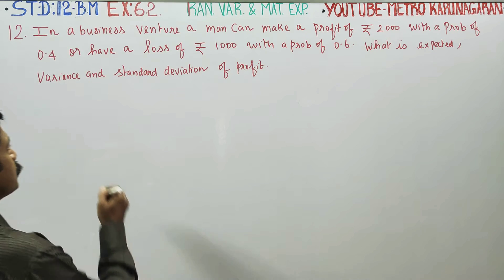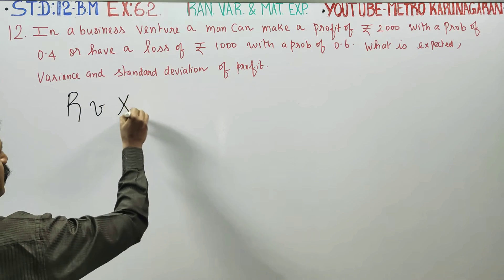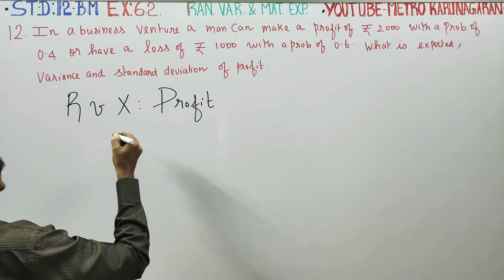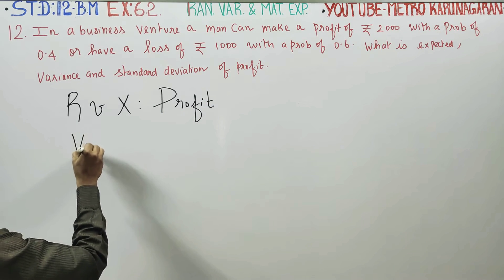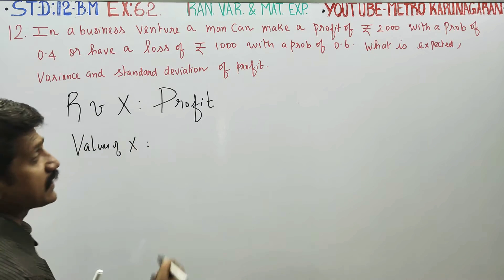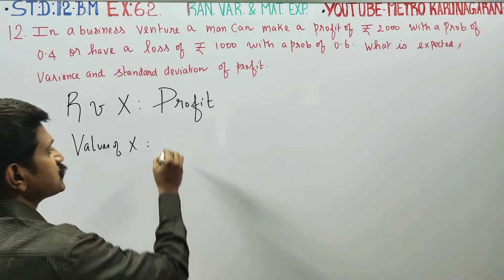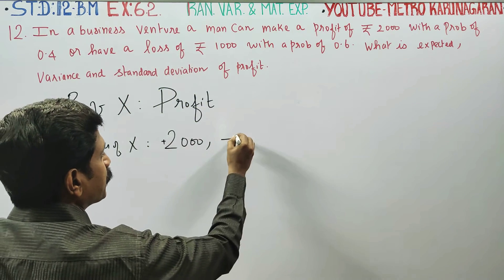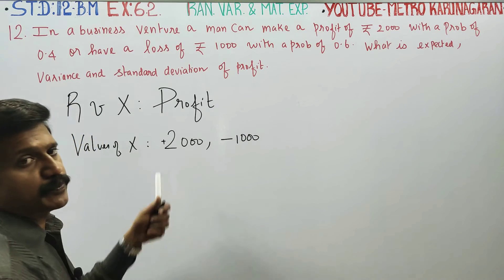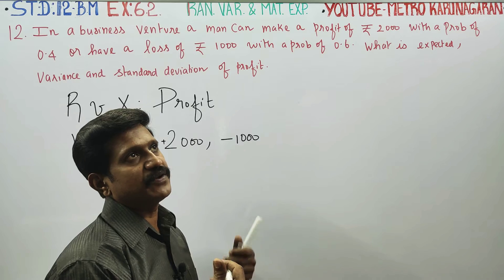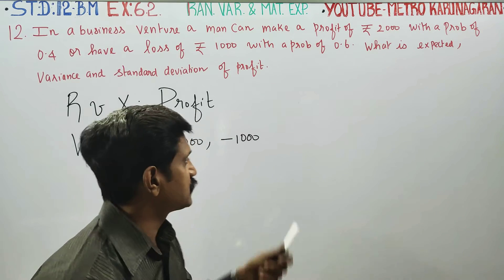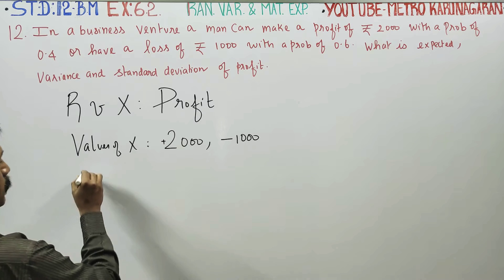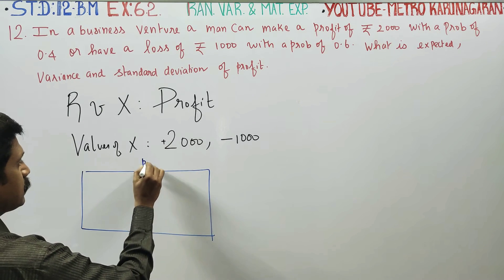If you see something like this, the random variable X represents the profit. The values of X are set as follows: profit 2000, so X = +2000, and loss 1000, so X = -1000. These are the two values of X. Now we are ready to set up the probability mass function.